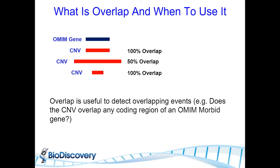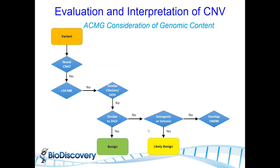Overlap is useful for detecting overlapping events: does the CNV overlap any coding region of an OMIM morbid gene? If it does, we call it a variant of unknown origin because we want to look at it in more detail — we know that gene has an impact. Keeping all these rules in mind, let's go ahead and look at some case examples.